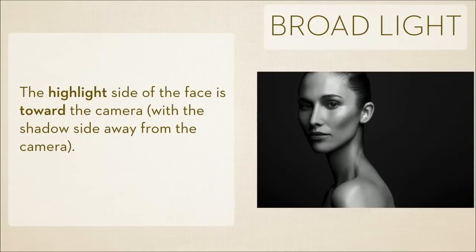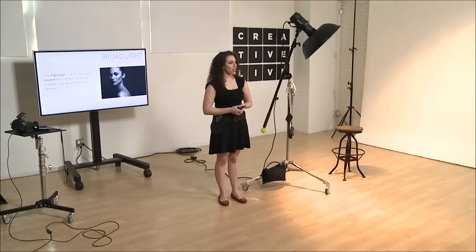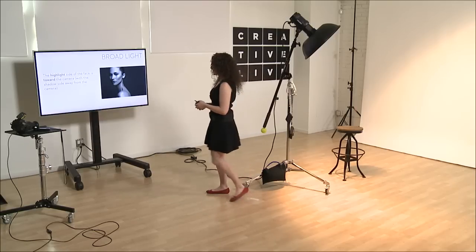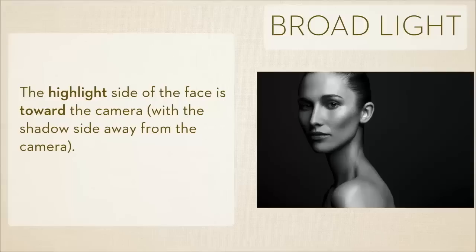The very first term you need to know is broad light. I never use this word — like I never talk about this except if I'm trying to explain what I'm doing. What broad light means is the shadow is going away from the camera. Her head's turned to the side and the shadow's being cast away from the camera. She's broadly lit; there's a lot of light towards camera. Technically, if you're trying to make someone's face look wider or broader, you would light like this because more of their face is illuminated.